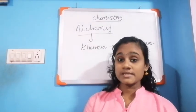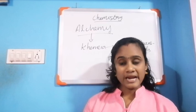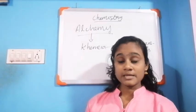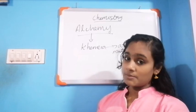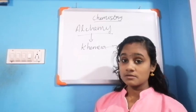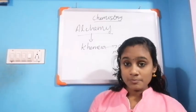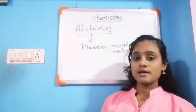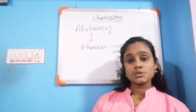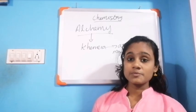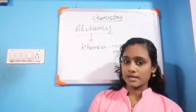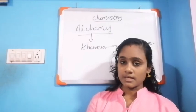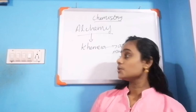Who is a chemist? People practicing chemistry are called chemists. What about alchemists? People practicing alchemy are known as alchemists. Presently we say chemist, but in ancient times the word alchemist was used.